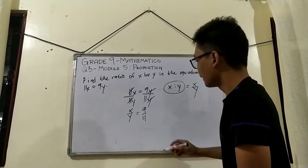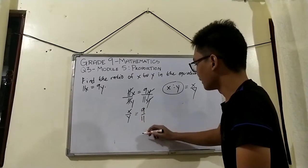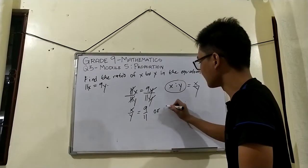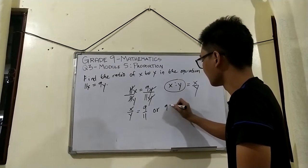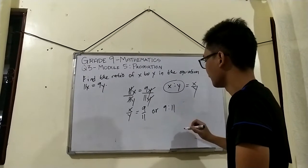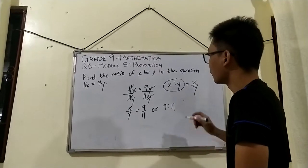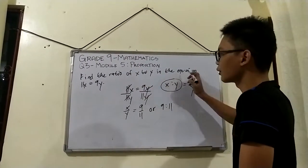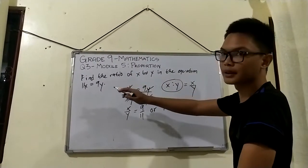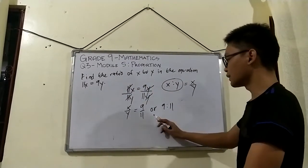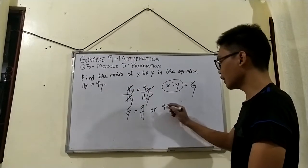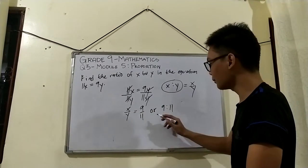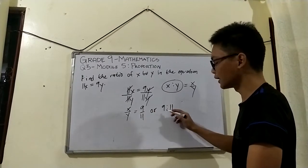So this can be written as 9 is to 11. Our ratio of x to y in the equation 11x equals 9y is 9 is to 11, or 9 over 11.